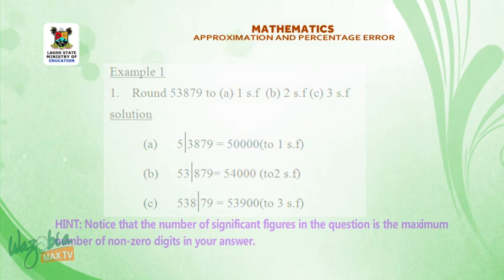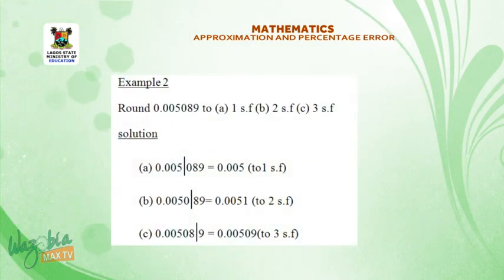Example 2. Now, students, round 0.005089 to a, 1 significant figure, b, 2 significant figures, c, 3 significant figures. A, 0.005089 is equal to 0.005 to 1 significant figure. B, 0.005089 is equal to 0.0051 to 2 significant figures. C, 0.005089 is equal to 0.00509 to 3 significant figures.